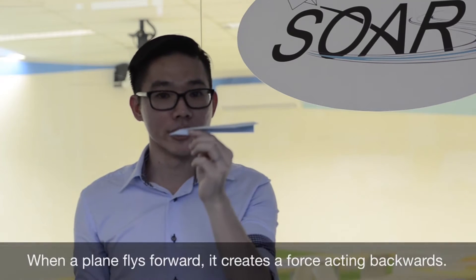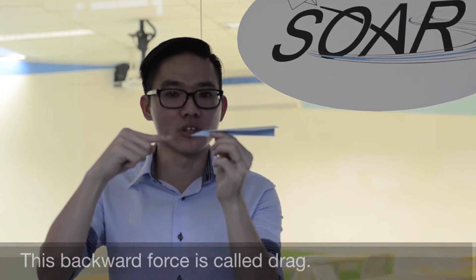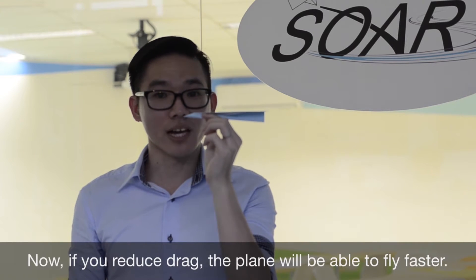When the plane flies forward, it creates a force acting backwards. This backward force is called drag. Now, if you reduce drag, the plane will be able to fly faster.